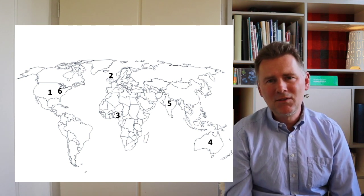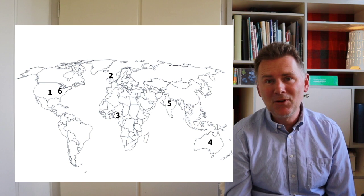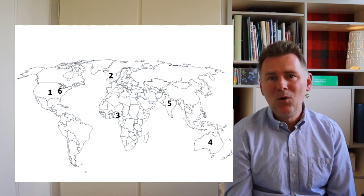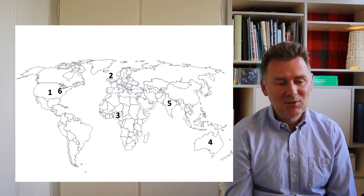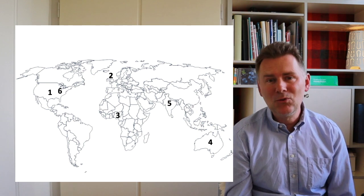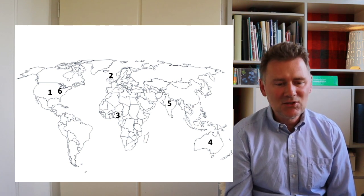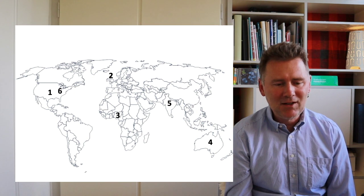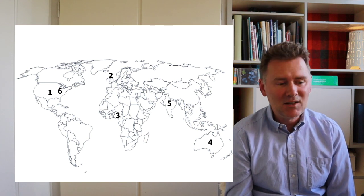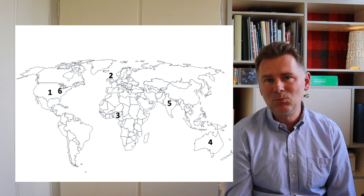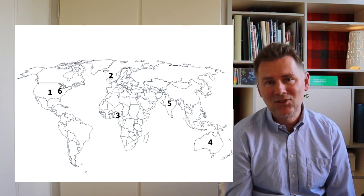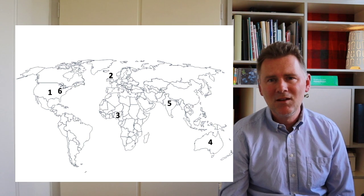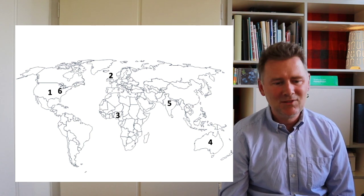Speaker number one was from the USA — that was probably not too difficult to figure out. Speaker number two was Scottish English. Speaker three — those two were speaking Nigerian English. Speaker number four was Australian English. Five was Indian English. And speaker number six was African-American Vernacular English. We'll talk about all of these varieties in more detail in this series of videos.